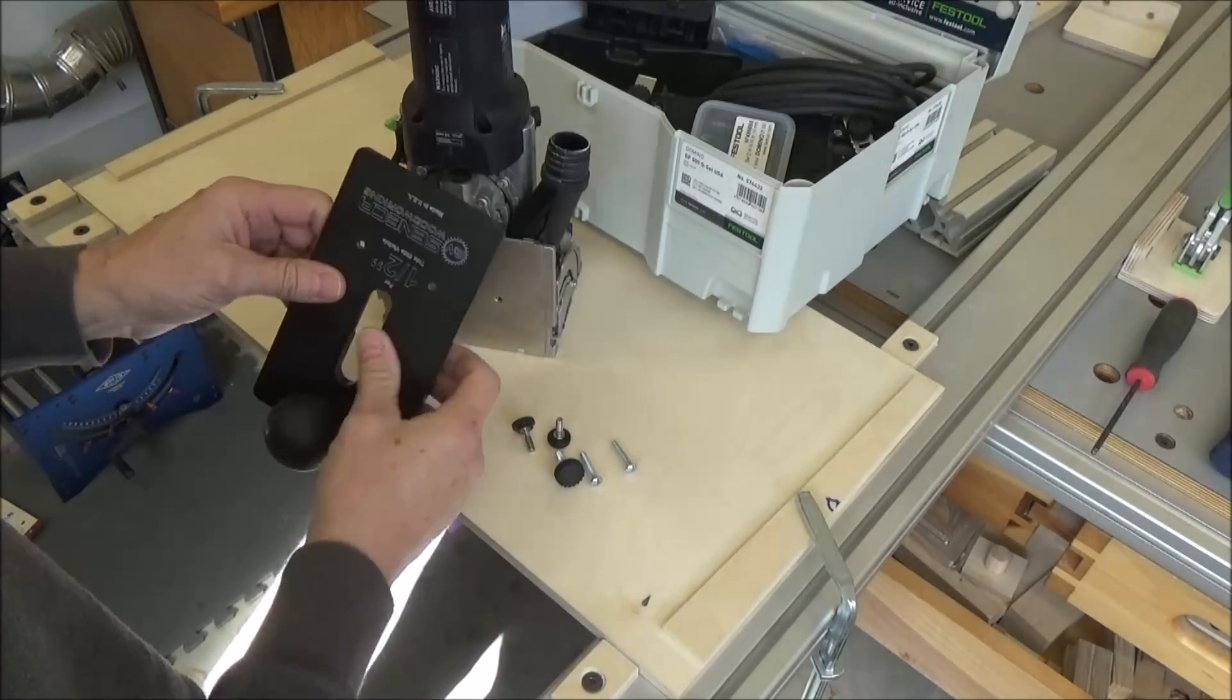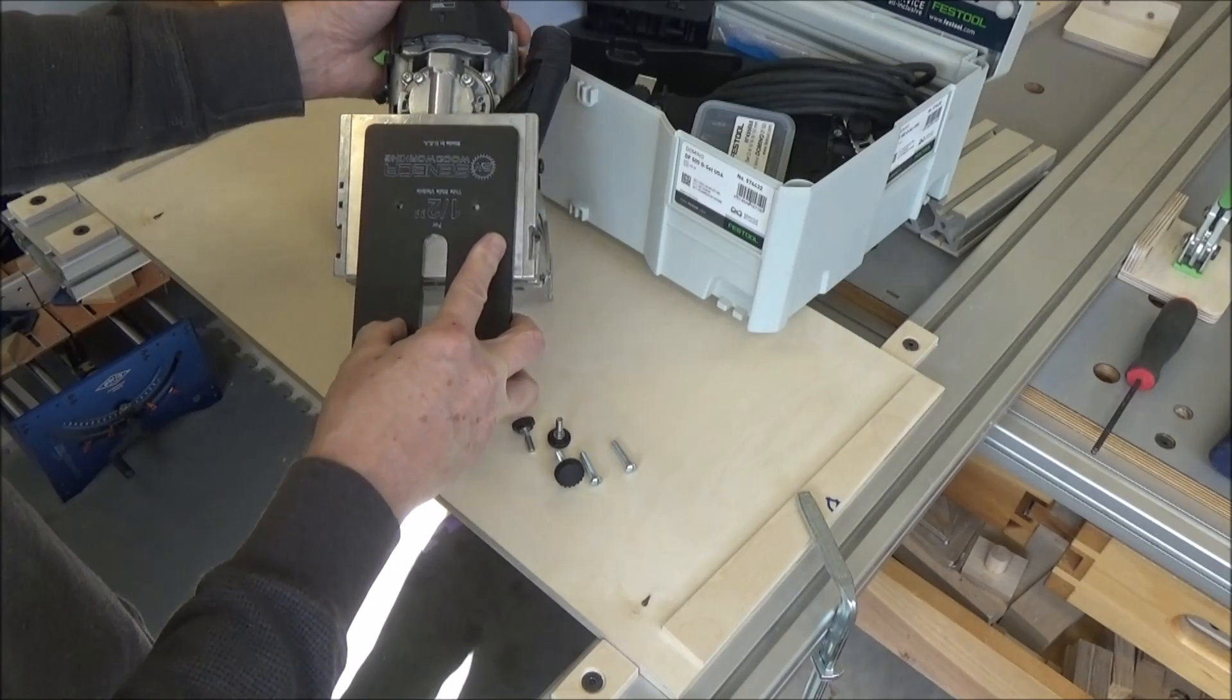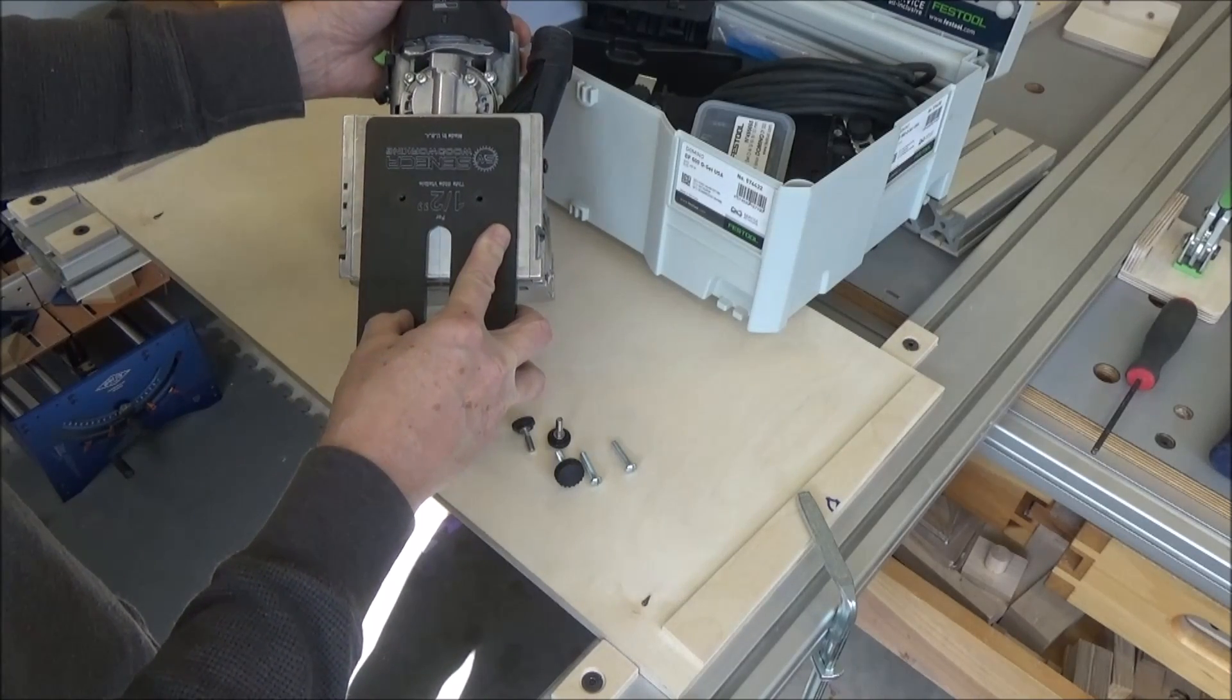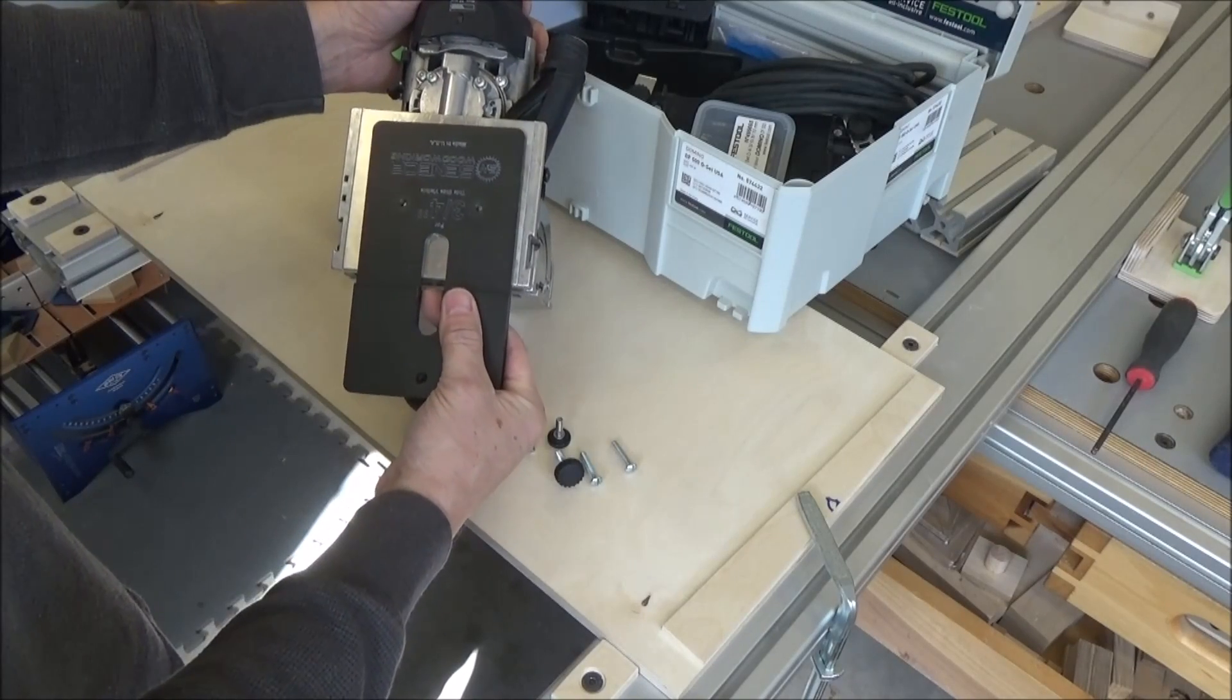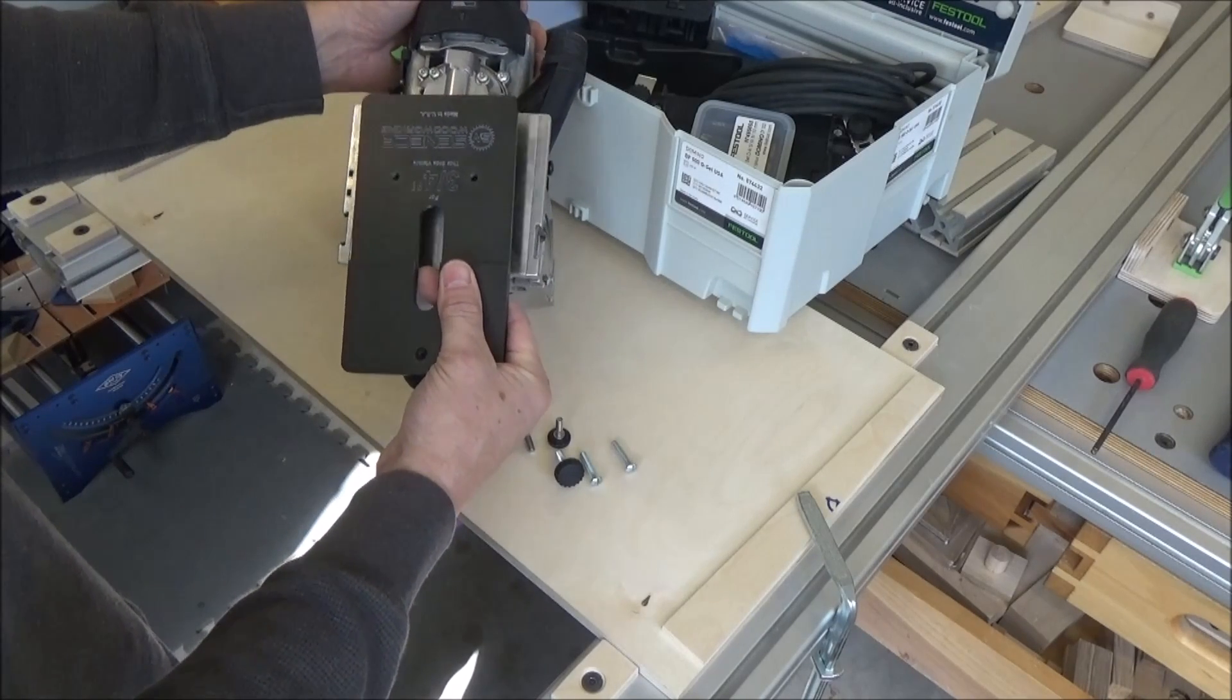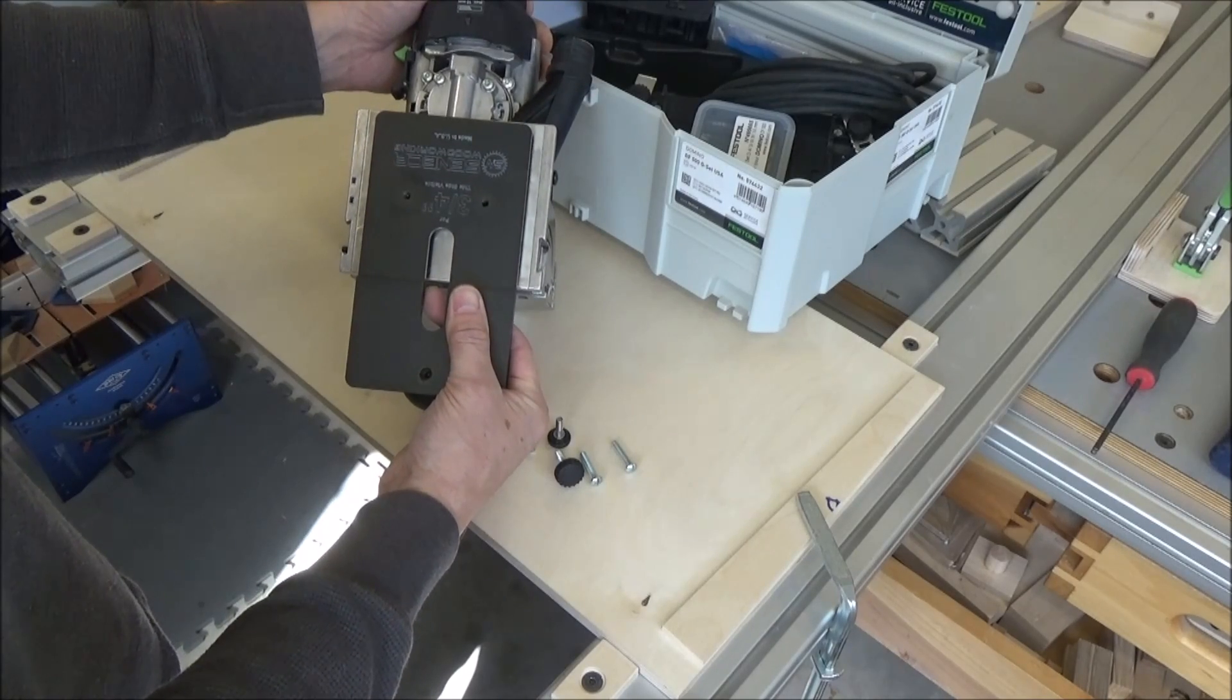So what I need to do is build a spacer plate to fit between this. Actually, it's going to go this way. When I put it on this way with the three-quarter inch side, I need to build it out a quarter of an inch to give me that offset I want.